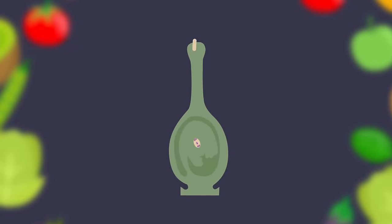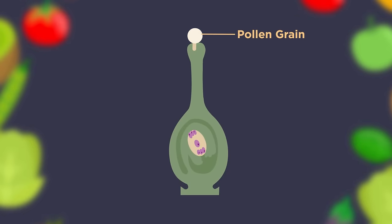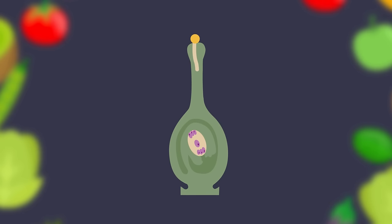Once a plant has been pollinated, fertilization can occur. Fertilization results in the production of seeds. A mature pollen grain containing two male sex cells has landed on the female stigma of the same species. The pollen grain grows a pollen tube that goes down the female style to the ovary, where it enters through an opening called the micropyle.